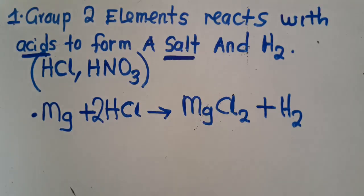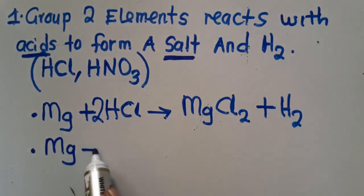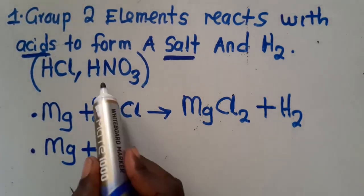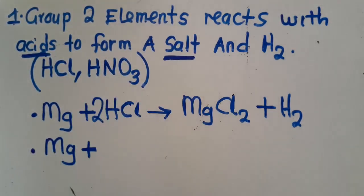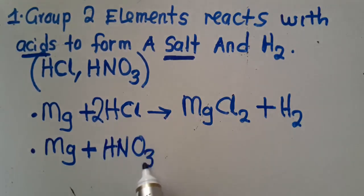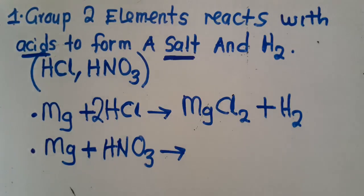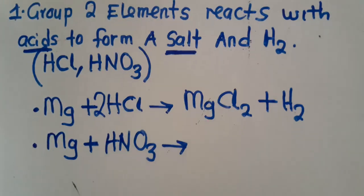What if I take the same magnesium and react it with nitric acid? This is nitric acid — this is how it is written. So what is going to be formed? I want to shed more light on this part because most of you don't know how to write chemical formulas correctly.